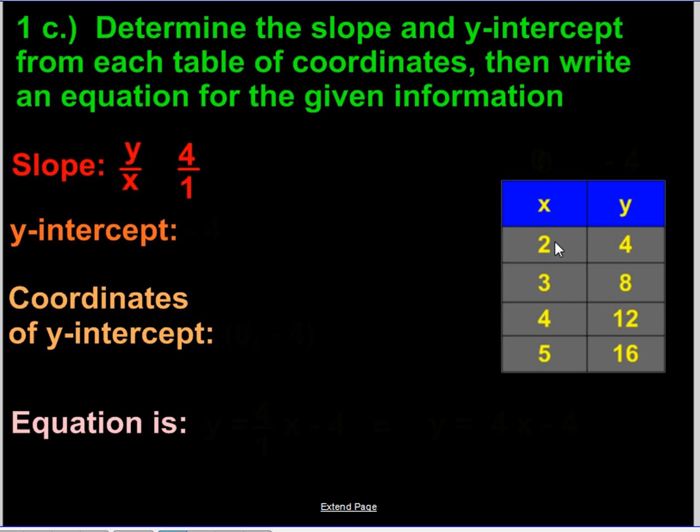The y-intercept. Again, we need to have 0 and then something over here. So in order to start from 2, 1, 0, we had to go back 2 times.